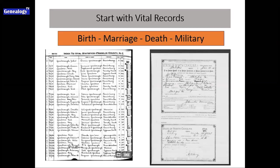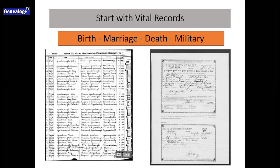Before we start talking about records particular to people of color research, remember that at the beginning for all of us, we start with just regular vital records having to do with birth, marriage, death, and sometimes military. This is a birth register from Franklin County, North Carolina, where you can see a lot of Yarboroughs — part of my paternal ancestry. In the older days, mostly the father's name was recorded, though you may occasionally see the mother's name as well.